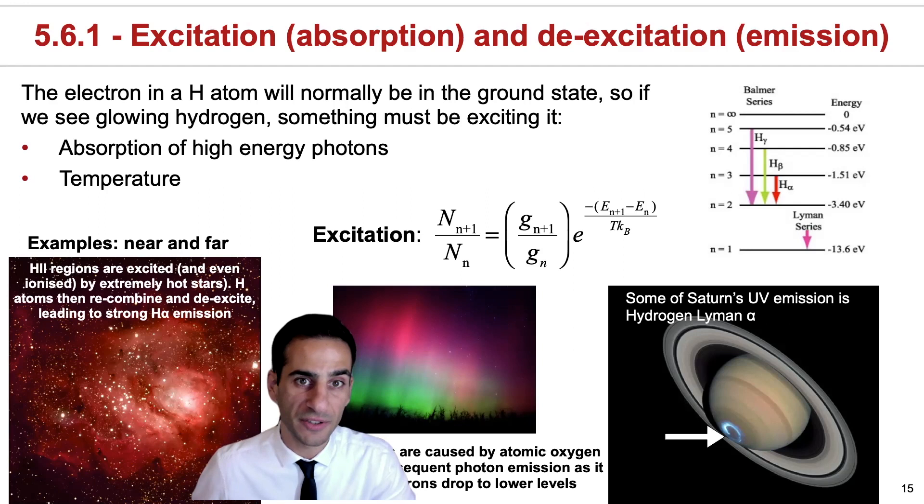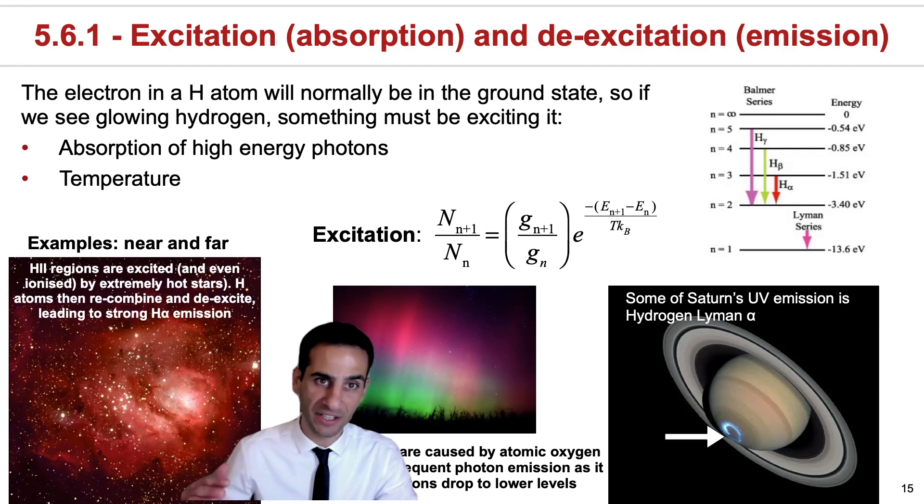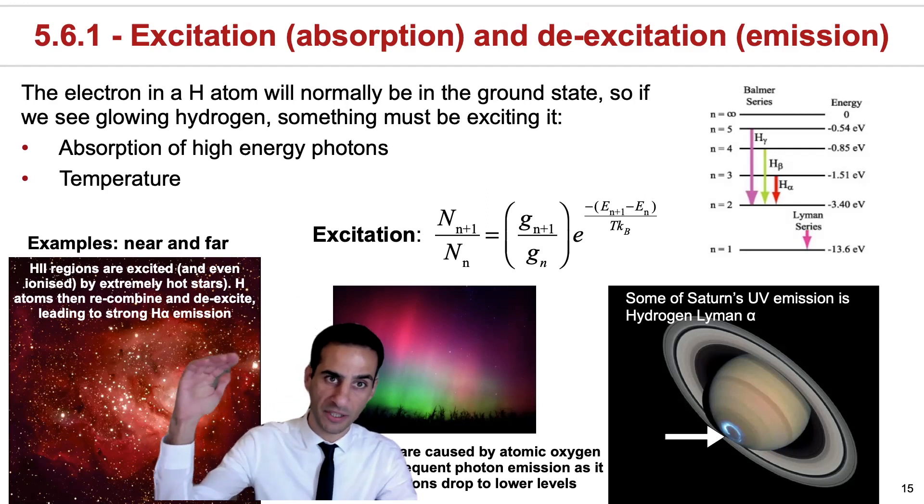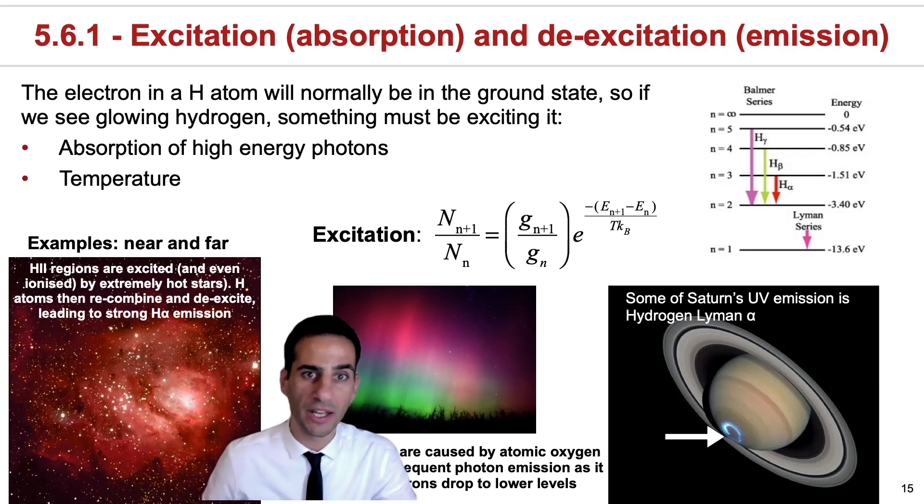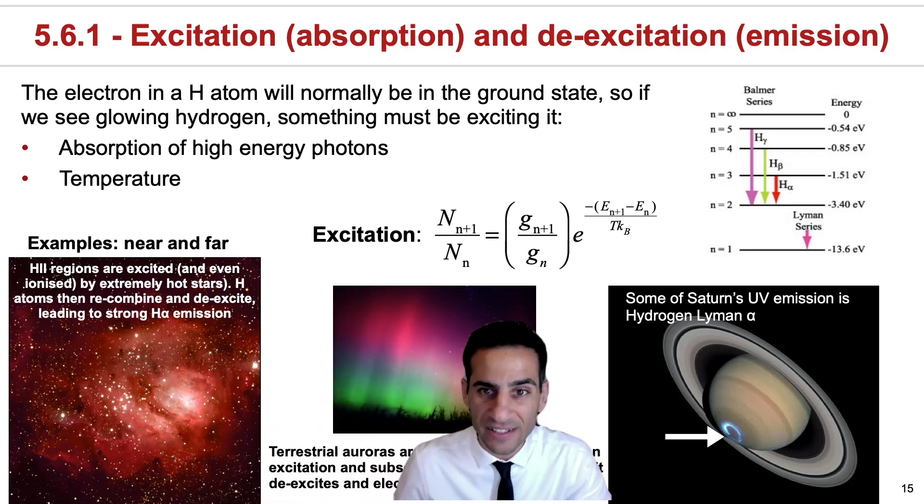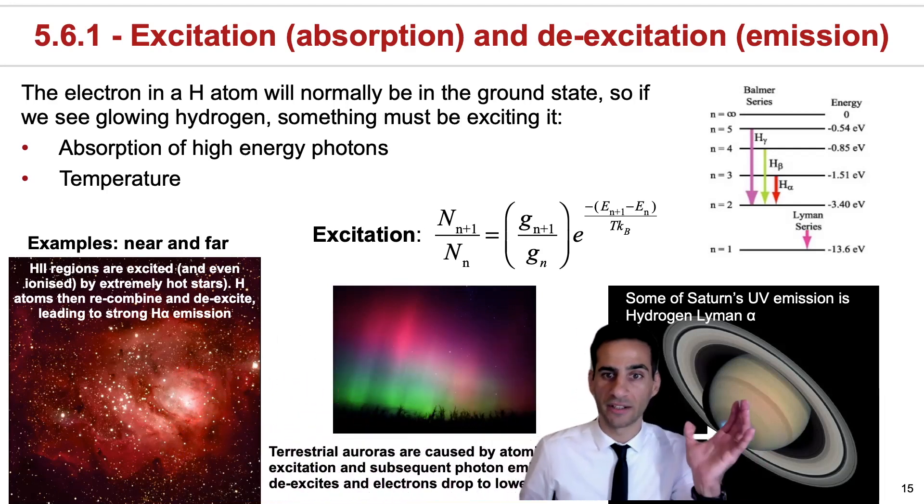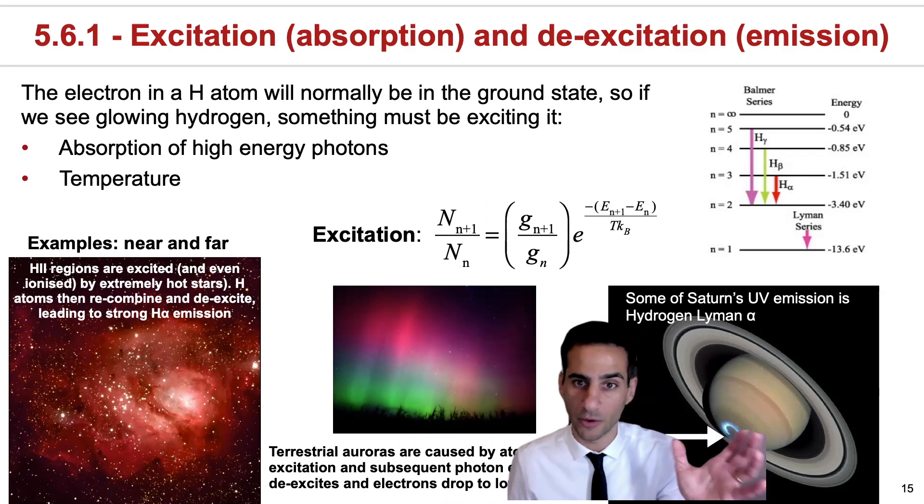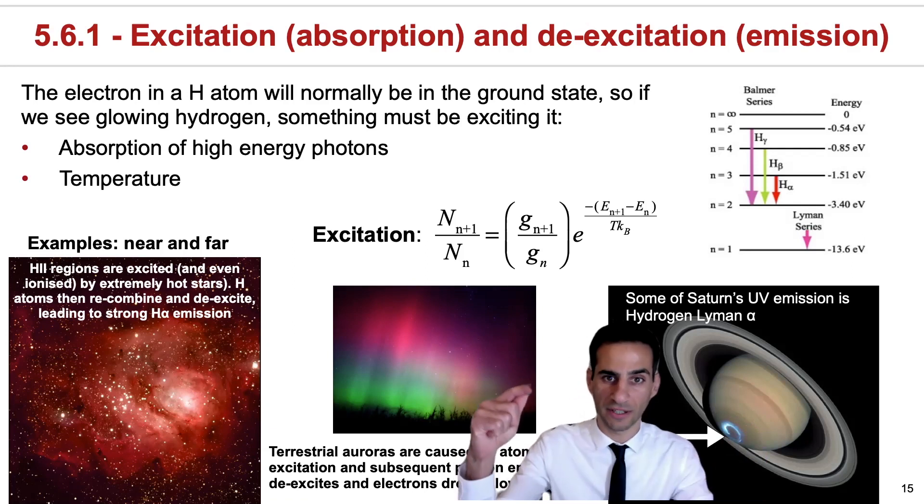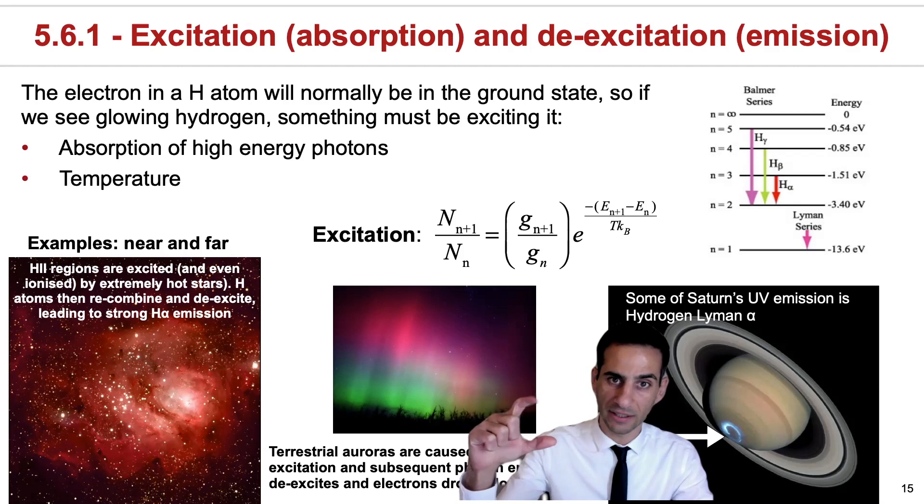From de-excitation, from essentially N equals 3 to N equals 2. And we also find de-excitation, for example, in Saturn's ultraviolet aurora coming out in Lyman alpha. So from the Lyman series, meaning the final energy level was N equals 1, and the delta of levels was 1 as well. So transition from N equals 2 to N equals 1.